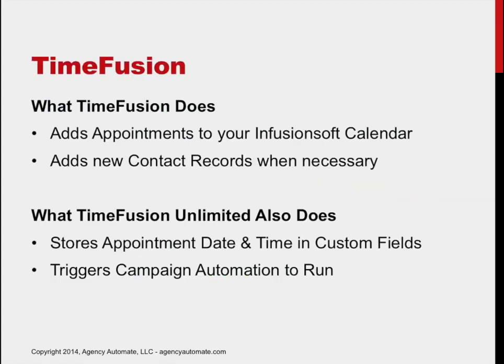So what TimeFusion does — first of all, it adds appointments to your Infusionsoft calendar. It also adds new contact records when necessary. All versions of TimeFusion perform those two steps. The TimeFusion unlimited version also stores the appointment date and time into your custom fields and triggers campaign automation to run. Those are two useful capabilities that allow you to customize your response to your contacts when a new appointment is set up.